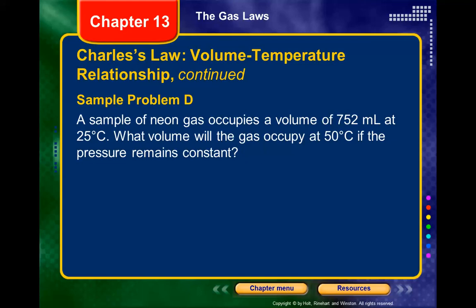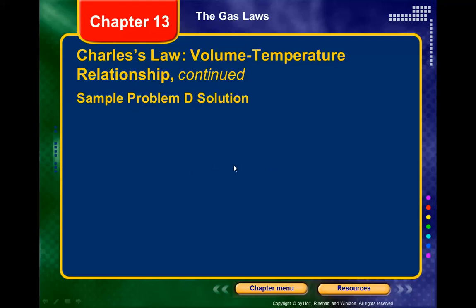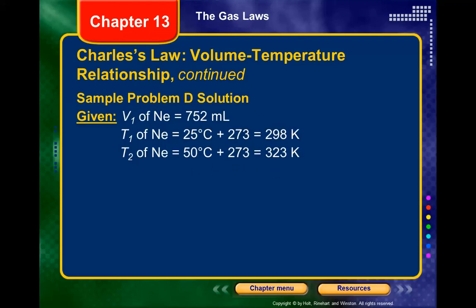Charles's law deals with volume and temperature — pressure remains constant and is not involved in the calculation. For our initial conditions, we note that we must convert Celsius temperatures to Kelvin every time we work with temperatures in gas laws. Add 273 to convert to Kelvin.